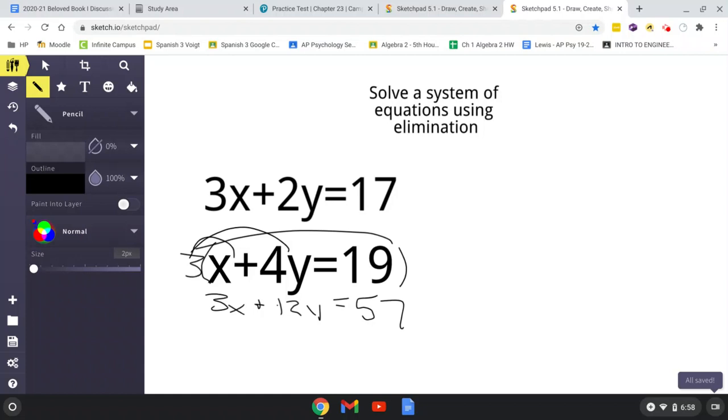19 times 3 is 57. So 3x plus 12y equals 57. And now this and the 3x below here are equal, so all we do is subtract. 3x minus 3x cancels out the x's, so now we only have one variable, y. 2y minus 12y gives us negative 10y.